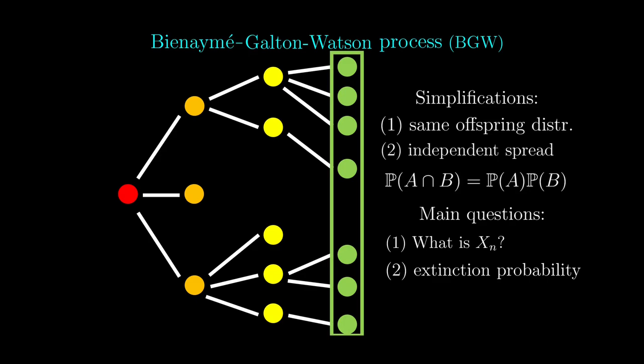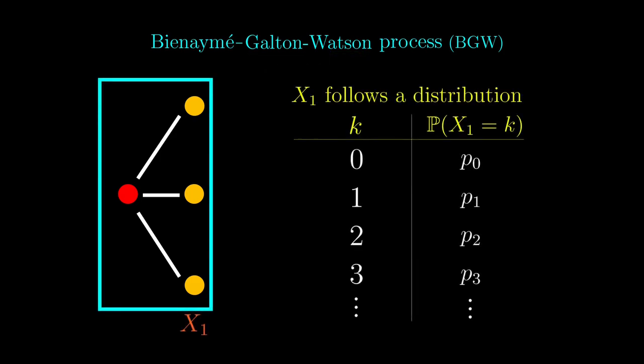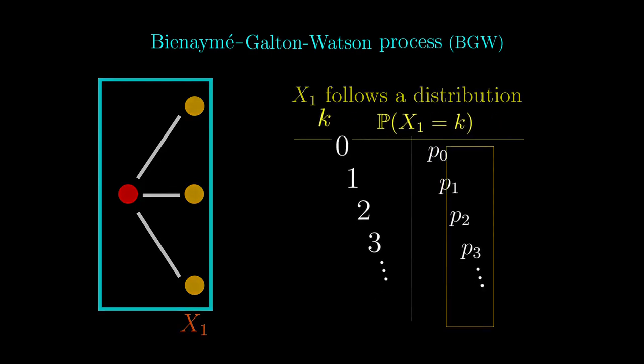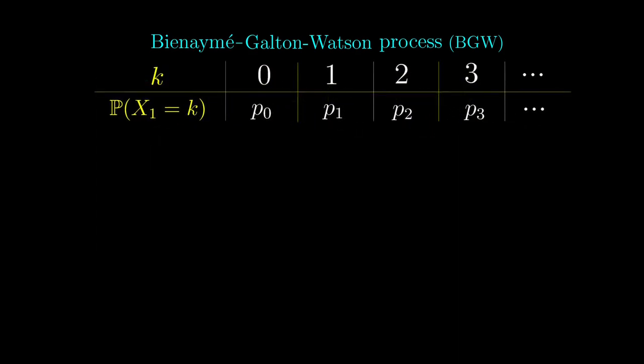But how do we get started on these two problems? The main issue here is that there seems to be a lot of parameters in this offspring distribution to characterize the entire process. These probabilities here can all change. So we want to turn this table to just one single thing. We do this via something called a generating function, which is a way to encode an infinite amount of data into just one thing.